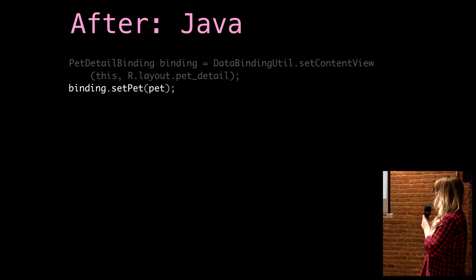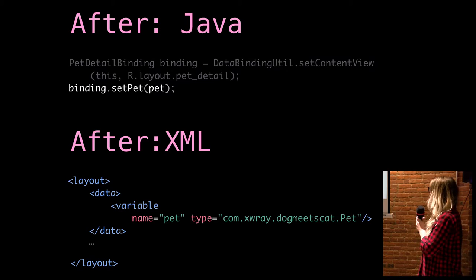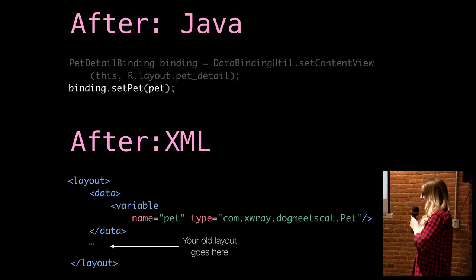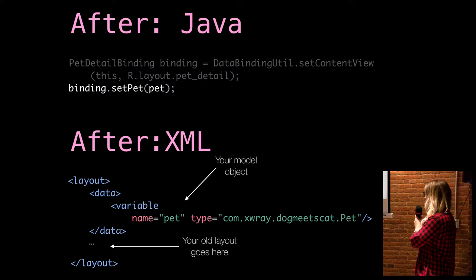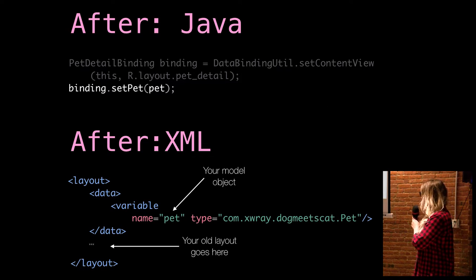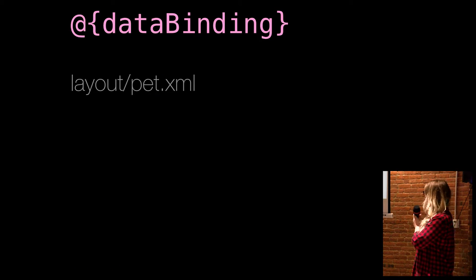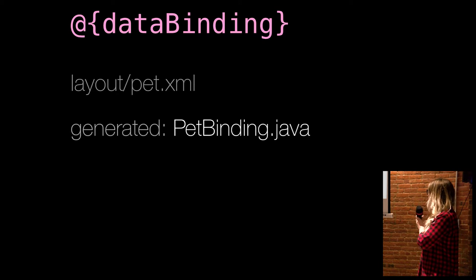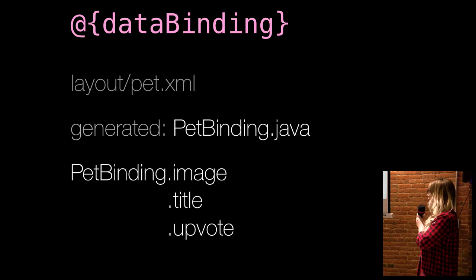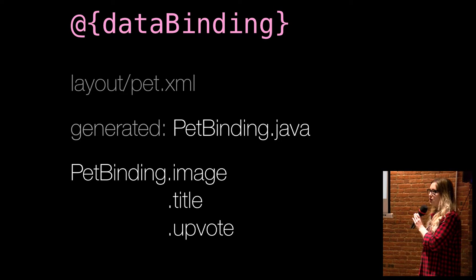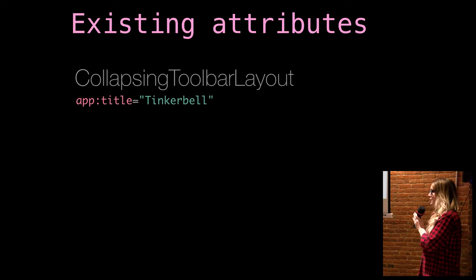So after data binding, this is the sum total of your Java code for this layout. You're going to set the content view and then you're going to set a model object called pet. The XML looks like this: your old layout goes right in there, you surround it with layout tags and this data tag, which is new. Your model object, which I call pet, goes in there. And that's all you do to your layout. Data binding takes any layout called pet.xml and generates petbinding.java, and saves things like petbinding.image, petbinding.title for any views you've given IDs — eliminating the need for findViewById entirely.